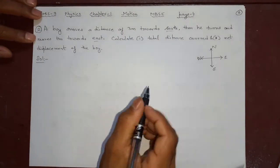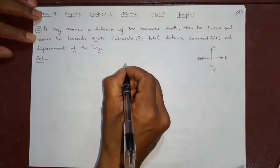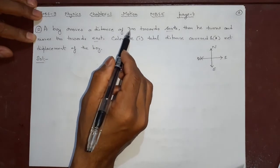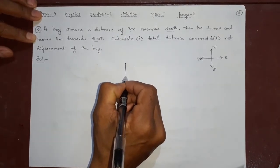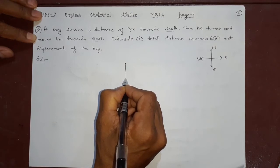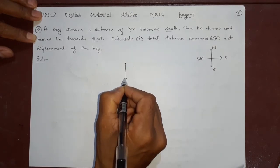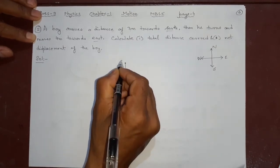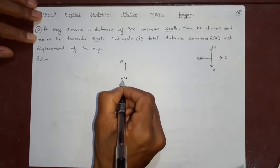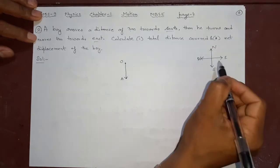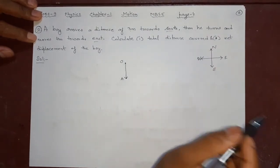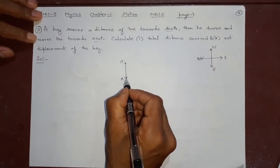Now suppose the boy is here, starting here. A boy moves a distance of 3 meters towards south. That means he will go this side south, right? Let me start from O. It reaches A. Then he turns and moves towards east. East is that side. So he turns this side. And how much?